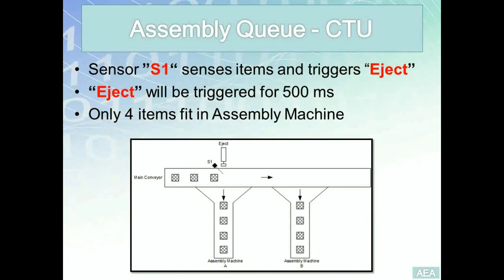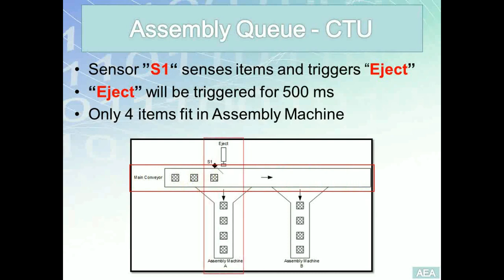The program we need to build for this example will control a number of items traveling on the main conveyor duct. The control we need to build will be responsible for diverting these items into the side assembly machines A and B.